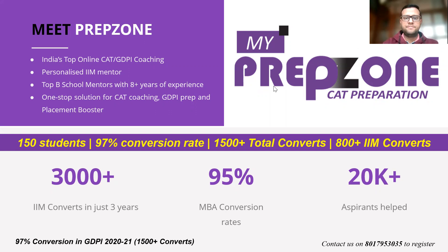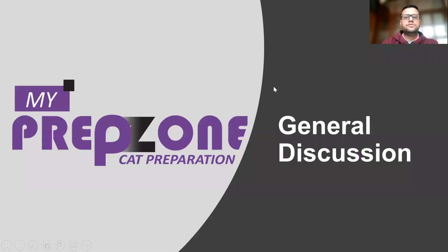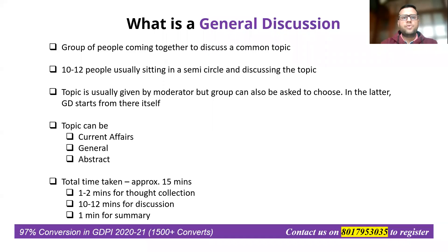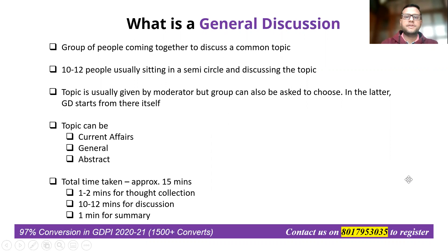Let's begin. Today we are gathered here to discuss Group Discussion, or GD. So what is a General Discussion? A general discussion is a group of people coming together to discuss a common topic. It's usually 10 to 12 people sitting in a semicircle format and discussing the topic.